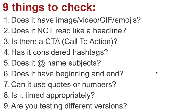Here are nine things to check as a checklist every time you're creating content for social media and Twitter in particular. First, check whether it has something visual — a video ideally, or a GIF, or failing that an image, or even some emojis. Second, does the text of the tweet not read like a headline? Make sure it reads like a story. Third, is there some sort of call to action — something like 'meet the person who,' 'read about,' 'see how,' 'watch,' or 'listen' — something that invites the reader to take action.